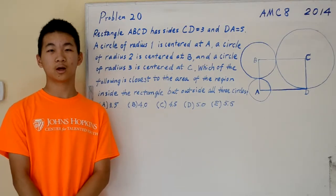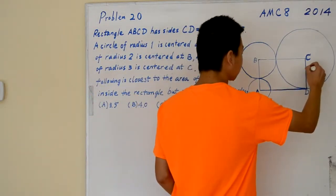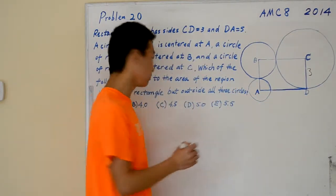The problem reads: rectangle ABCD has CD equals 3 and DA equals 5.